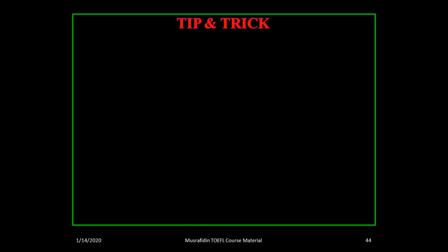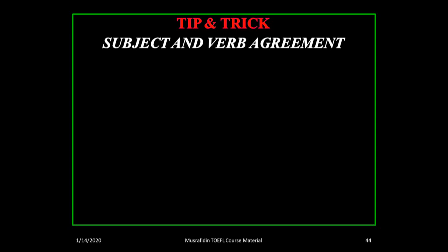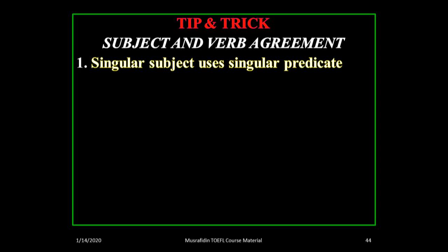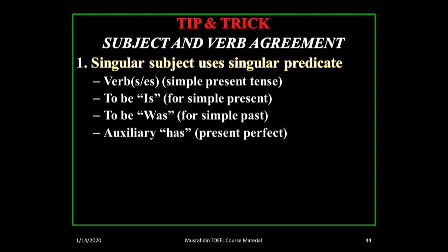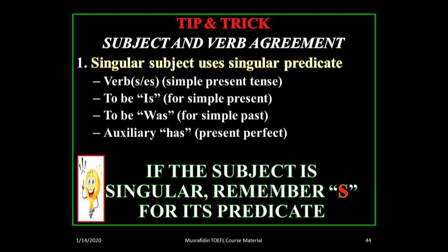Now let's talk about the tip and trick. Regarding subject-verb agreement: if the subject of the sentence is singular, you need to use a singular predicate. Singular predicate is signaled by a verb with -s or -es. For simple present, use to be 'is'; for simple past, use 'was'; for present perfect, use auxiliary 'has.' Remember: singular subject — look for 's' in the predicate.